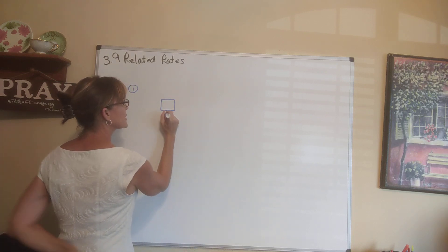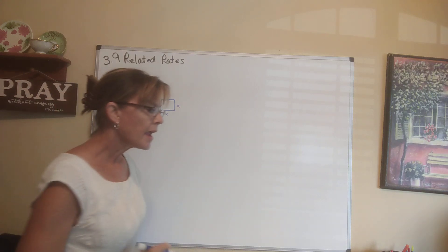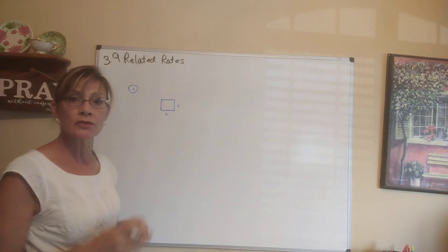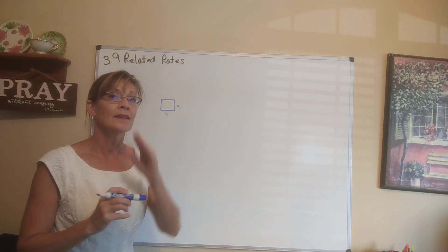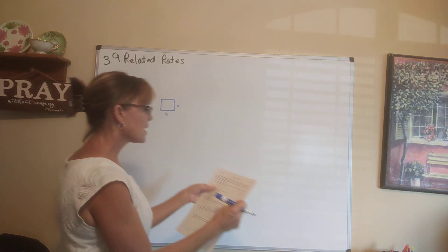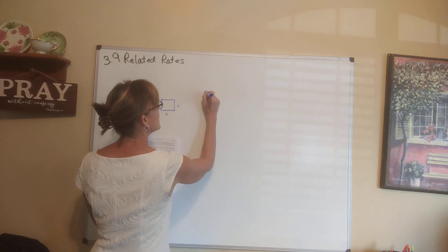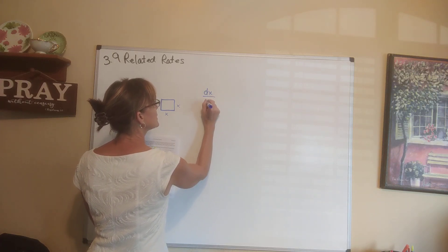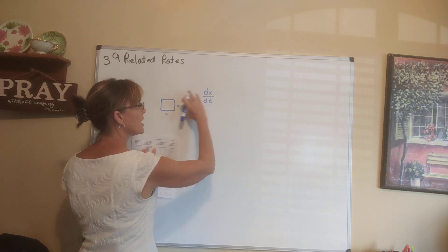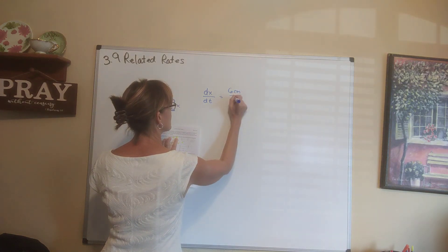We're all familiar with a square. What we know about a square is that the length and width are the same side. We have this situation where the side of the square is increasing at a certain rate. When you hear a rate, that is a derivative. When they say each side of a square is increasing at a rate of six centimeters per second, that means dx/dt is equal to six centimeters per second.